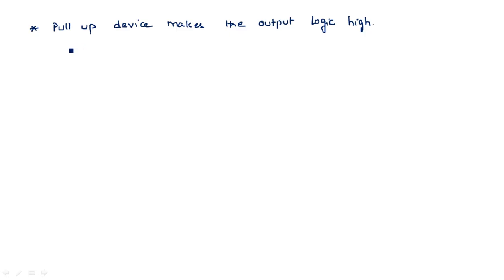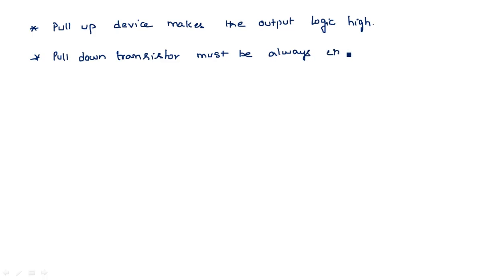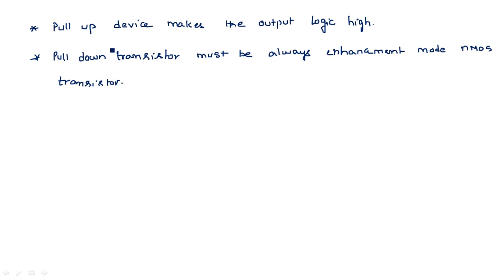In the pull-down transistor we always use an enhancement mode NMOS transistor. The pull-down transistor must always be an enhancement mode NMOS transistor. But what about the pull-up device? For the pull-up device we can use different types.